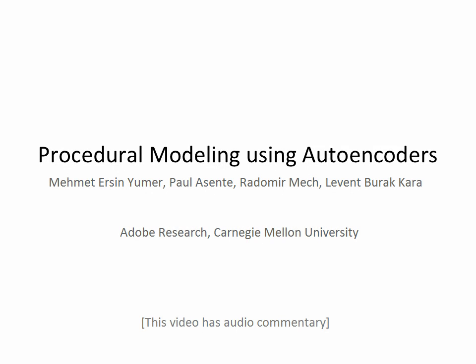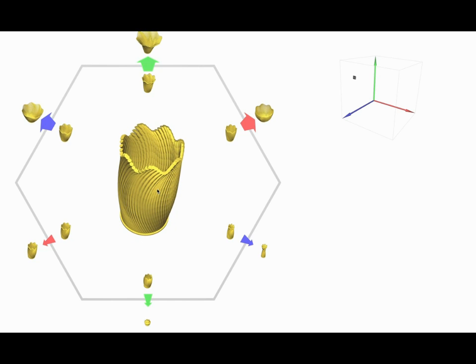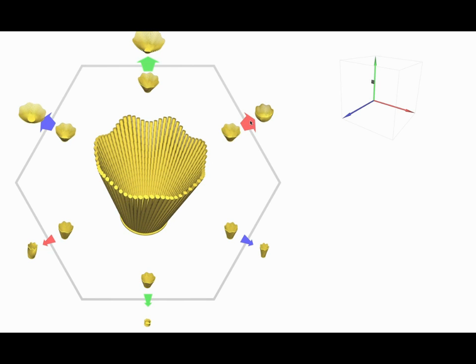We present a method for fast and intuitive procedural modeling using autoencoder networks. Our system enables users to design models 6 to 12 times faster compared to conventional procedural modeling systems.